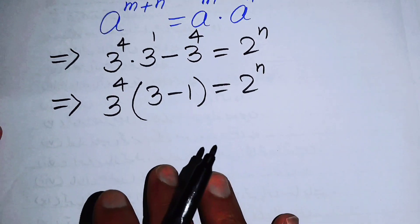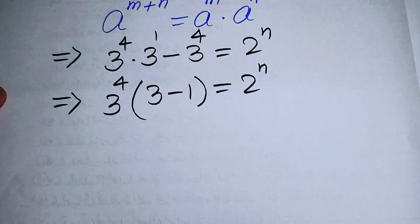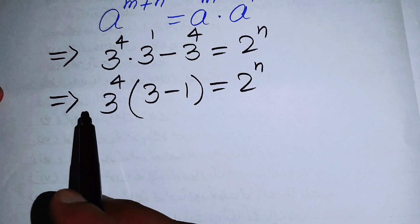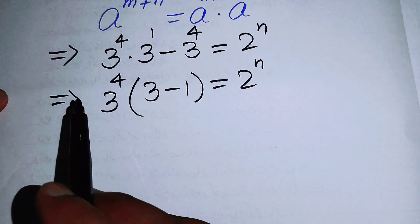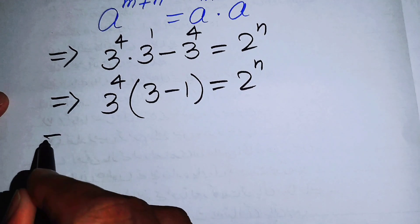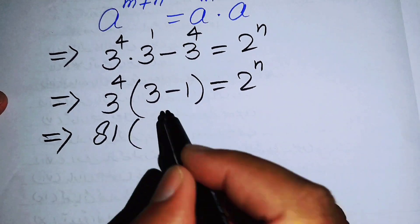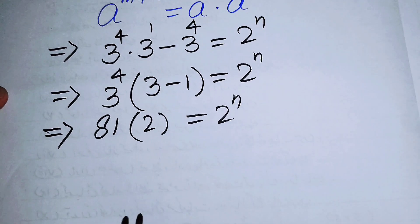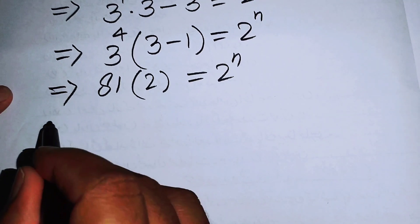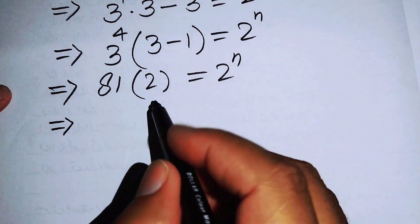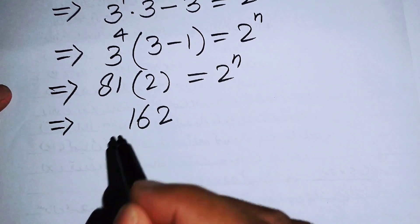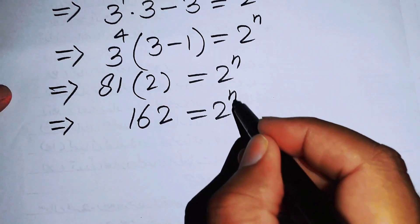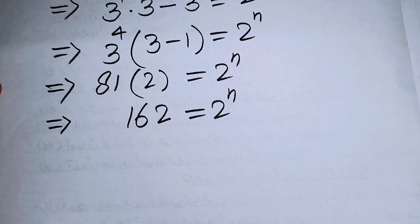Now we evaluate: 3 to the power of 4 equals 81, and 3 minus 1 equals 2, so we have 81 times 2 equals 2 to the power of n. Multiplying 81 by 2 gives 162, so 162 equals 2 to the power of n.